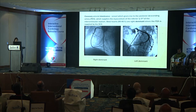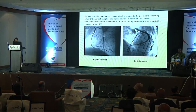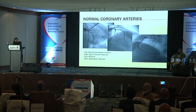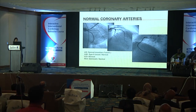Coronary artery dominance is indicated by which artery gives rise to the posterior descending artery — either the RCA or circumflex. These are pictures of normal coronary arteries, and the ideal coronary angiogram reporting is: left main normal, LAD type 2 vessel and normal, circumflex normal, RCA dominant and normal.